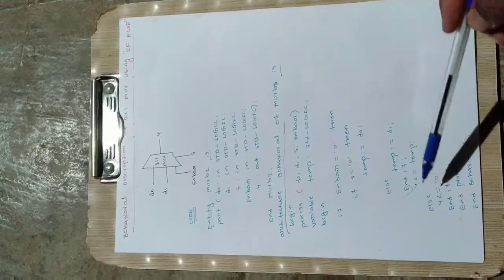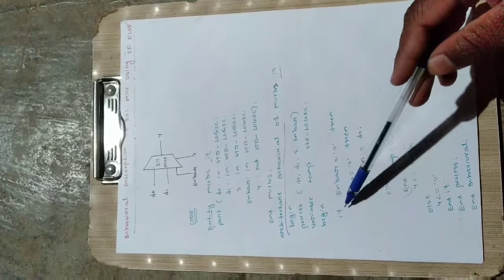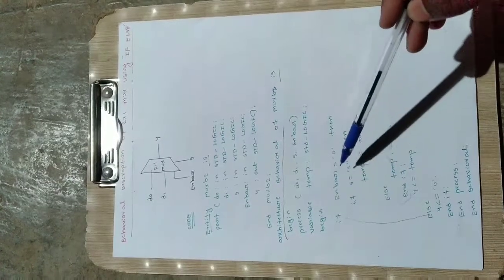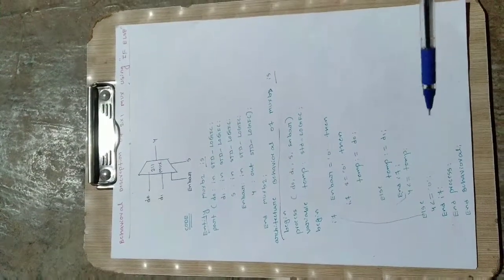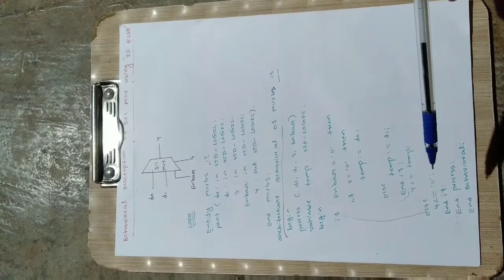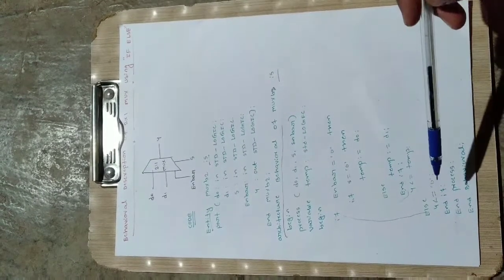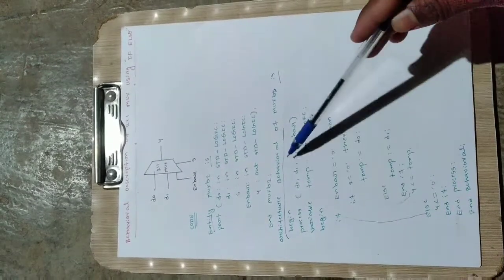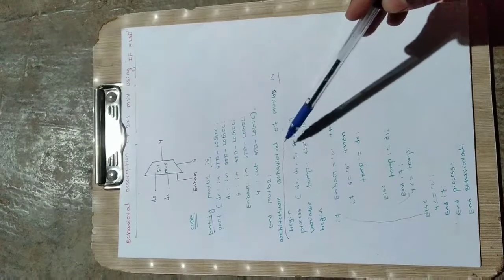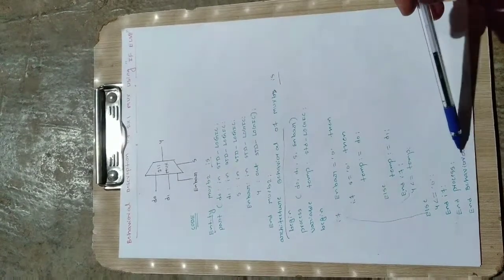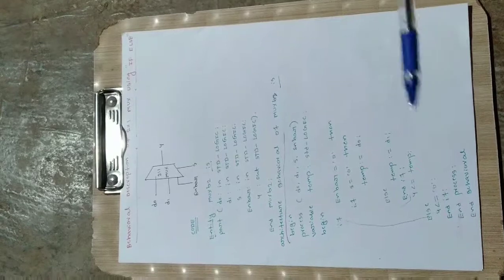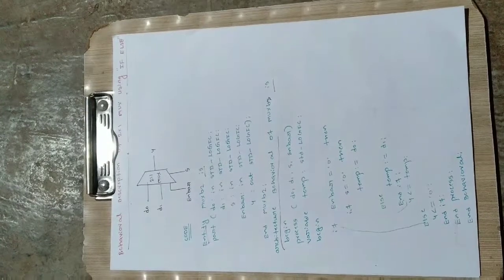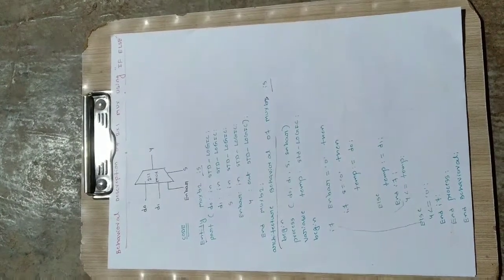The outer else handles when enable bar equals 1, meaning the mux is in the off state, so y is assigned 0 directly. The if loop ends, then end process, and end behavioral — the behavioral module ends here. So like this we can write a code for a 2-to-1 mux with the help of if-else statement. I hope you like this video — please subscribe the channel for more videos.